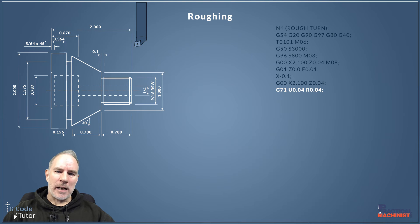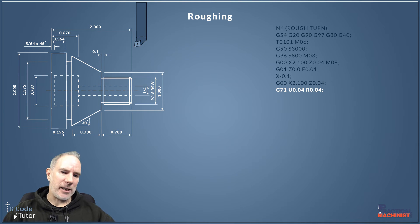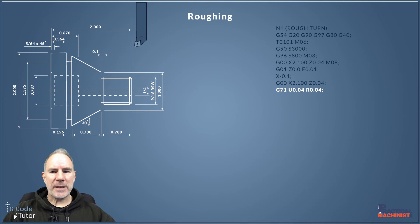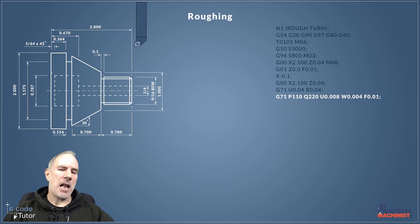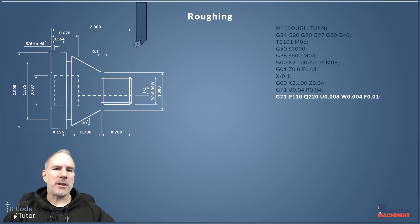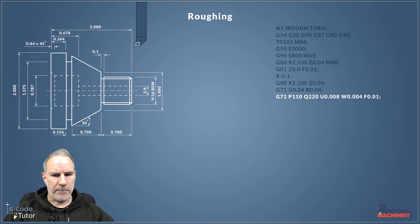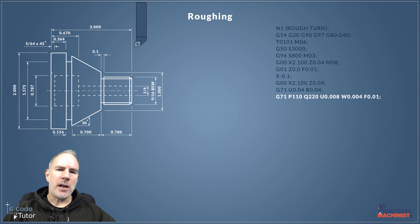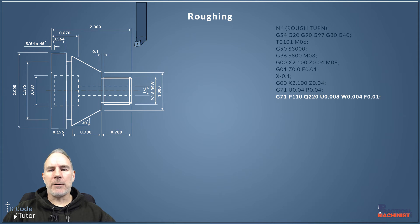On the first line of G71 we start with G71 to tell the machine this is the roughing cycle. The U value is our depth of cut — 40 thou per pass, which is fine for aluminium. The R value is the retract amount: after each cut the tool retracts 40 thou before moving back to the start of the sequence. On the second G71 line, P and Q designate the subroutine boundaries using N numbers. U on this line is our finishing allowance — 8 thousandths in X — and W is 4 thou on all lengths in Z. Finally, we add a feed rate.